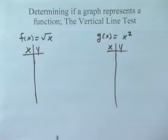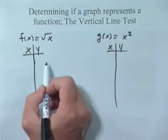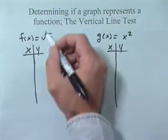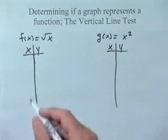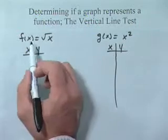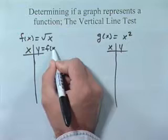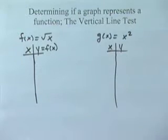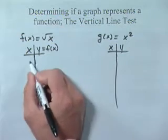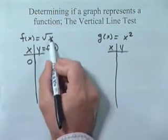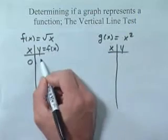Now remember, a function takes an element x to exactly one element in y. So what I'm going to do is I'm going to arbitrarily pick a few x values and figure out what the corresponding f of x values are or y values. Remember, y is going to be the same thing as f of x. Let's start with 0. If I plug a 0 into my function, I get 0 because the square root of 0 is 0.